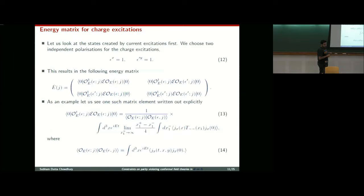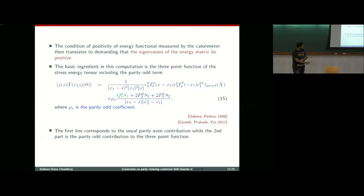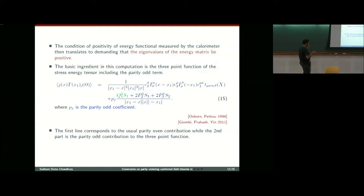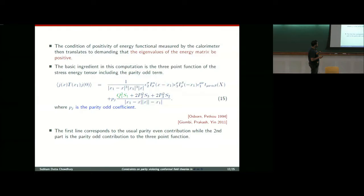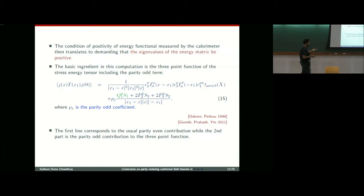The off-diagonal components are cross terms. Since we now have a matrix, the condition of positivity of energy flux translates to the requirement that the eigenvalues of this energy matrix must be positive. We are looking at the three-point function of two J's and one T in certain limits, performing integrals over them. The first line of the JJT correlator is the parity-invariant part due to Osborne and Petkou, while the second part is the parity-violating part; Pj is the parity-odd coefficient, found by Shiroman and his collaborators.